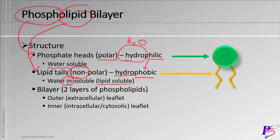The next thing to discuss is that it is a bilayer. If we're talking about numbers — one, two, three — bi means two. So how do we say one? One is mono. What about three? We'd say tri, right? Tri-layer, for example. But the phospholipid bilayer has two layers.